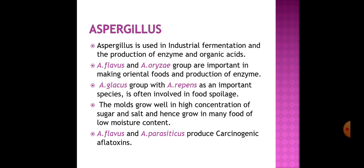The next fungi is Aspergillus, used in industrial fermentation and in production of enzymes and organic acids. Aspergillus flavus and Aspergillus oryzae group are important in making oriental foods and production of enzymes. Aspergillus glaucus group causes food spoilage, growing well in high concentrations of sugar and salt, and hence grows in foods of low moisture content. Aspergillus flavus and parasiticus are known to produce carcinogenic agents known as aflatoxins.